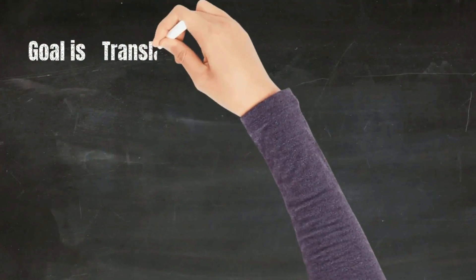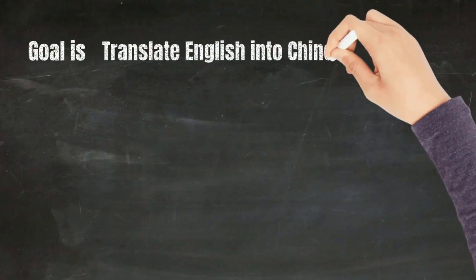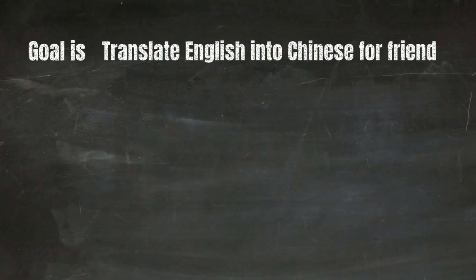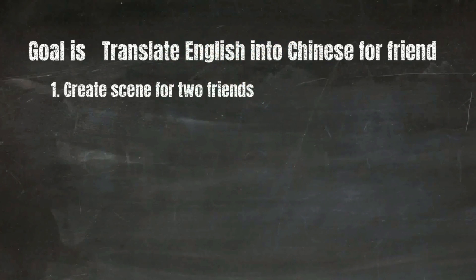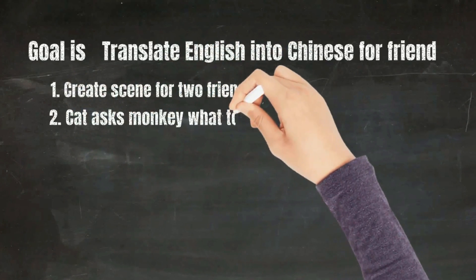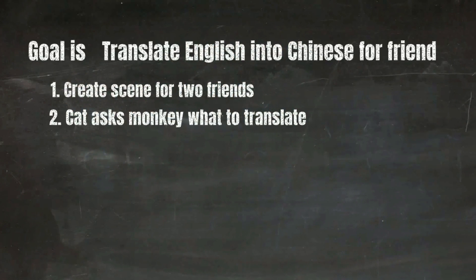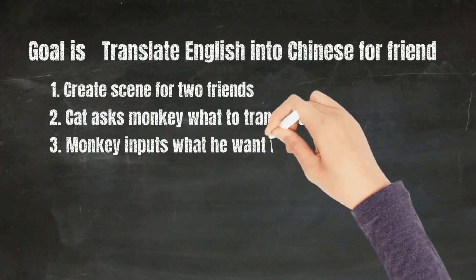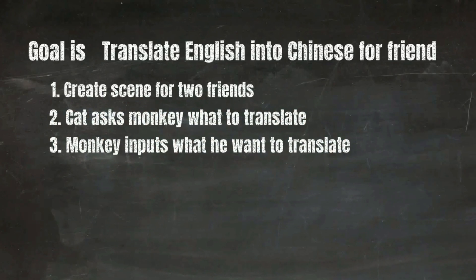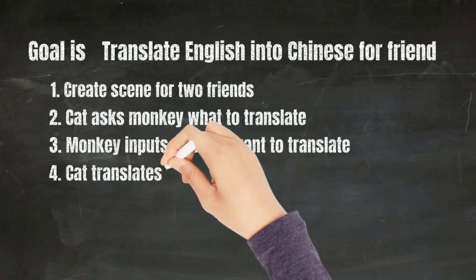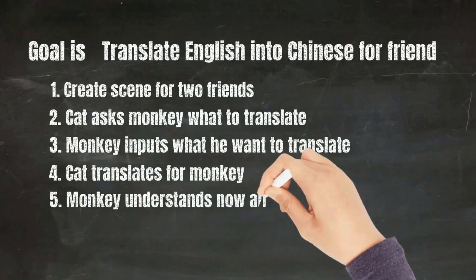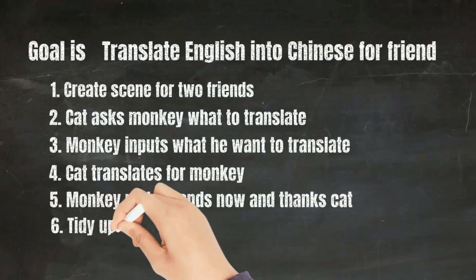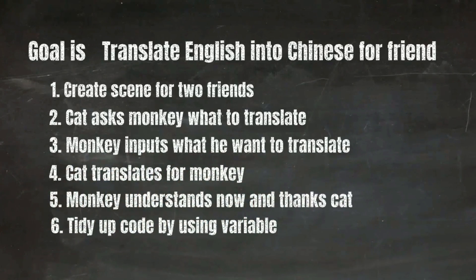Today our goal is to translate an English sentence, paragraph, or word into Chinese for a friend. We're gonna create a scene for two friends or characters like monkey and cat. The cat will ask the monkey what to translate, the monkey will input what he wants to translate like banana, and then the cat will translate it. Then we'll tidy up the code using variables.